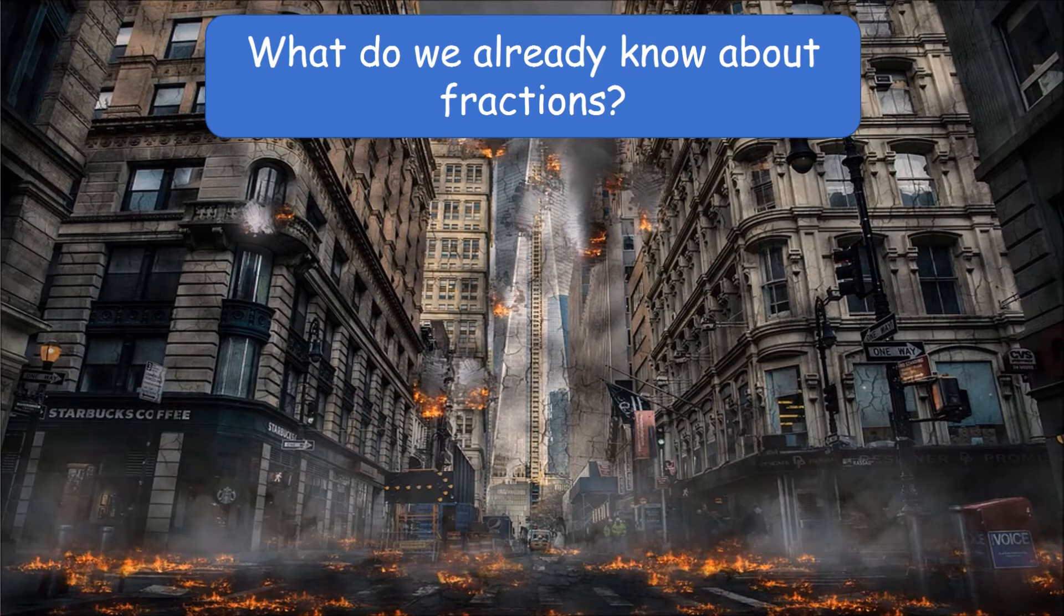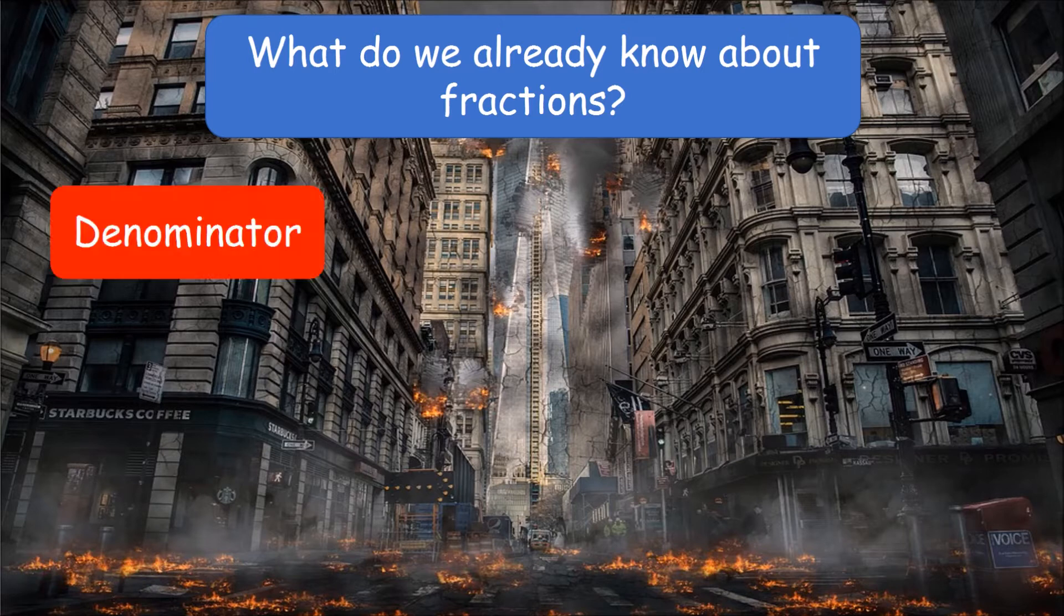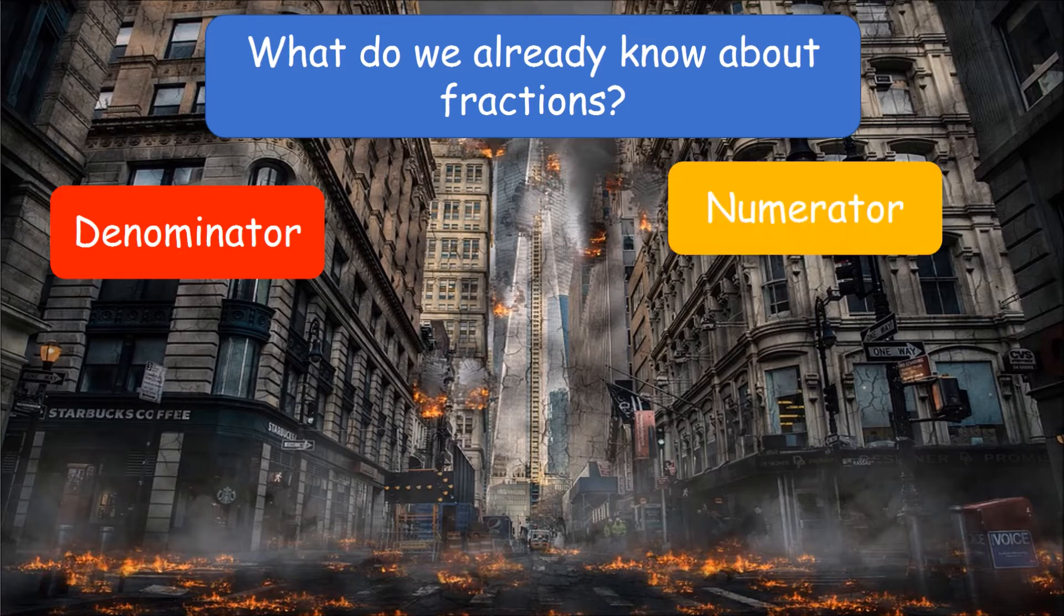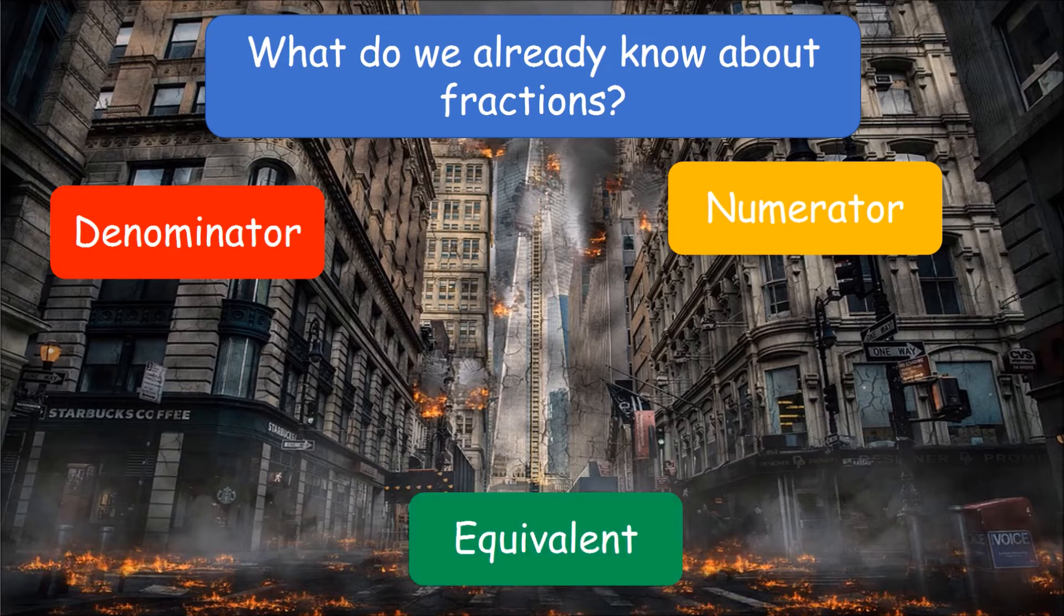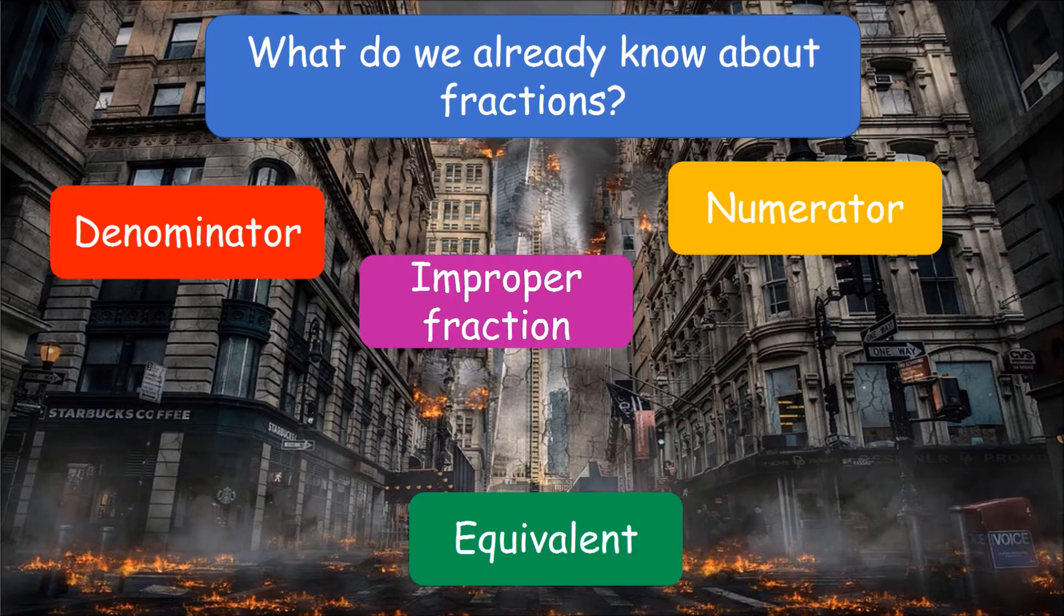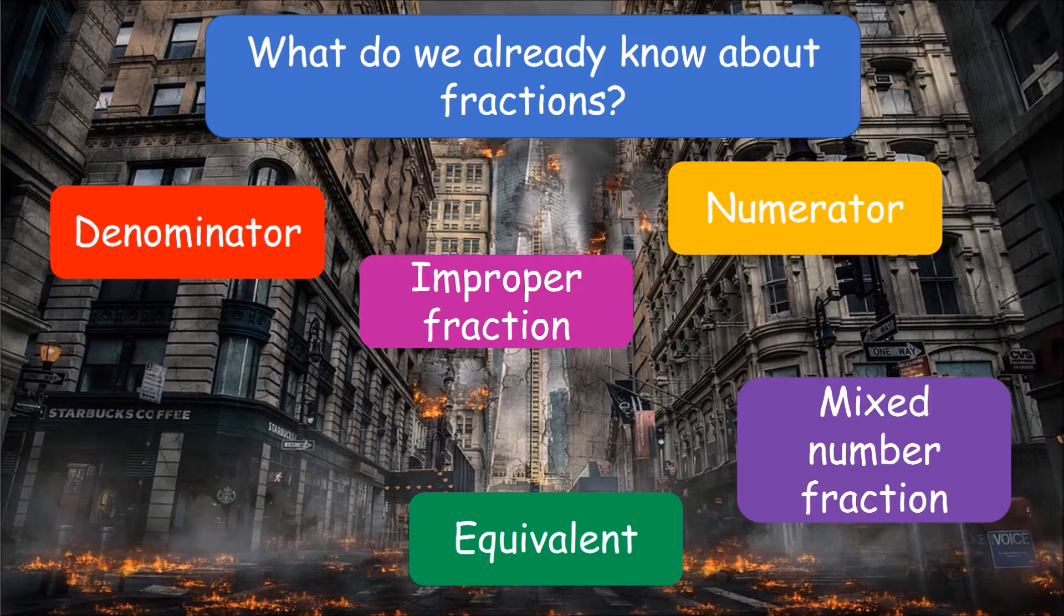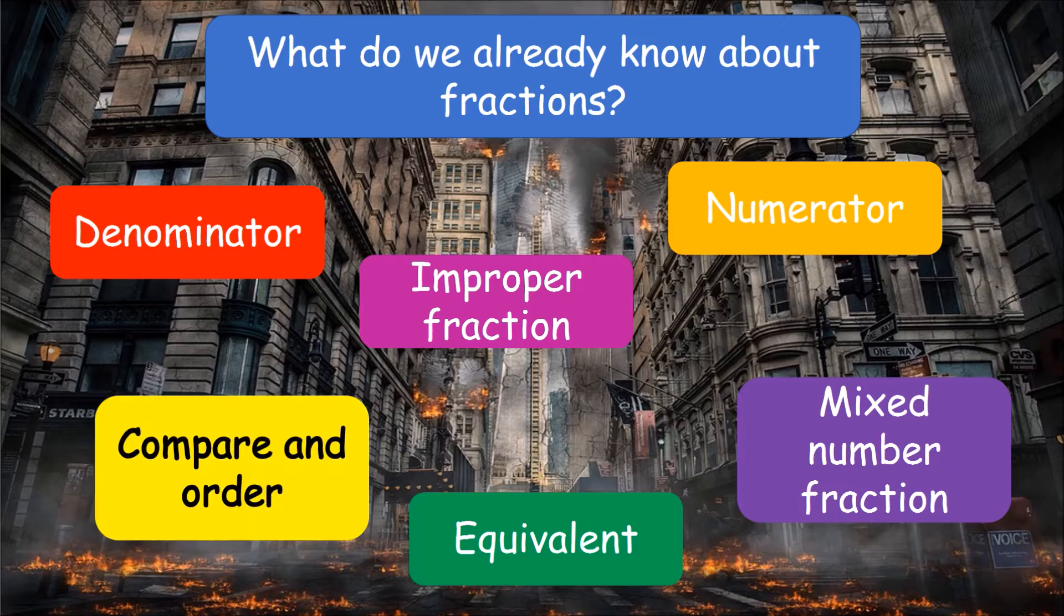Now you already know lots about fractions. For instance you know what a denominator is, it's the number that goes below the bar and tells us how many equal parts fractions divided into. The numerator is the number that goes above the bar and tells us how many equal parts we're using. Then equivalent, we know that means it's equal to. An improper fraction means the numerator is larger than denominator. A mixed number fraction is a whole number and a fraction, and we know how to compare and order fractions.